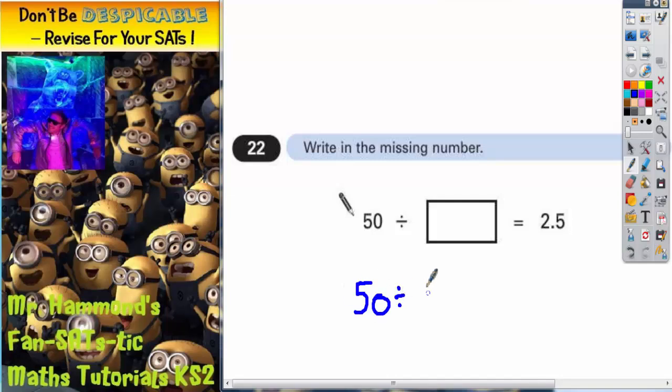So if we had 50 divided by a mystery number equals 25, that would be nice and easy. Because that would be 2. 50 divided by 2 is 25.